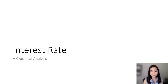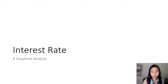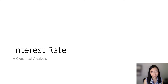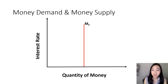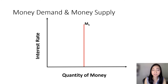Hello everyone, Professor Franz here. Today we're going to put our money demand and money supply curve together to find the equilibrium interest rate. Our money supply is a vertical line because it is controlled by the Federal Reserve, our central bank.